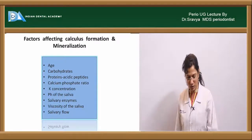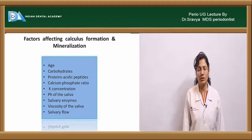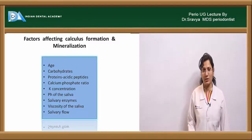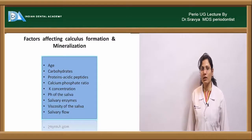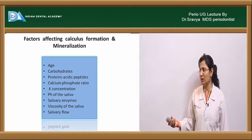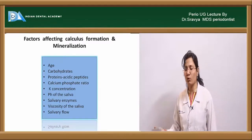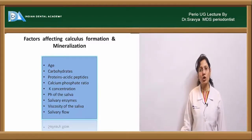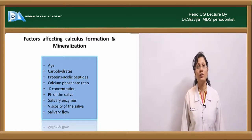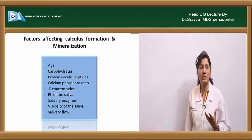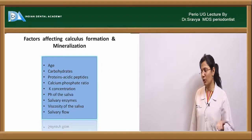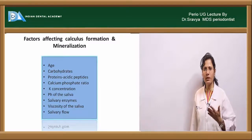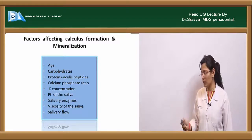Factors influencing calculus formation include: age, diet (carbohydrates — sticky vs. fibrous food), proteins and acid peptides, calcium-to-phosphate ratio (higher ratio increases mineralization tendency), potassium ion concentration, salivary pH, salivary enzymes, and viscosity of saliva. Viscous saliva decreases flushing and self-cleansing, promoting plaque and calculus accumulation. Similarly, xerostomia reduces salivary flow, eliminating the self-cleansing effect.